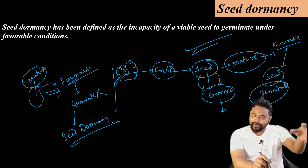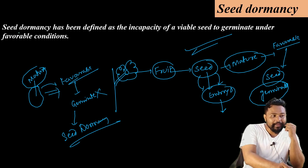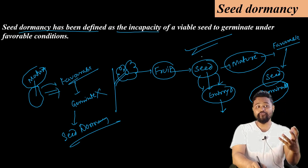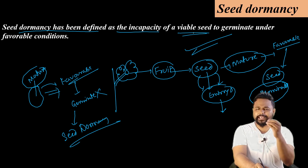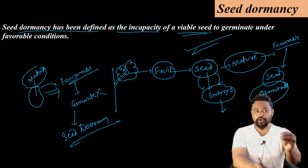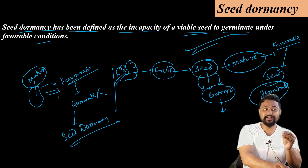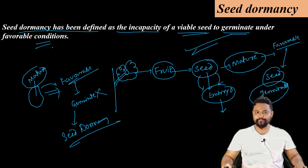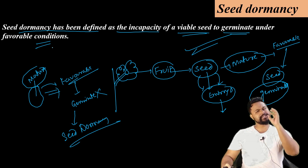Seed dormancy has been defined as the incapacity of a viable seed to germinate under favorable conditions. Even a healthy, viable seed, under the right conditions, fails to germinate - that situation is called seed dormancy.